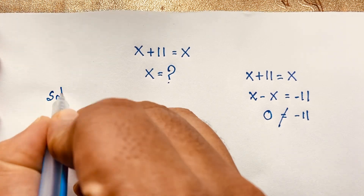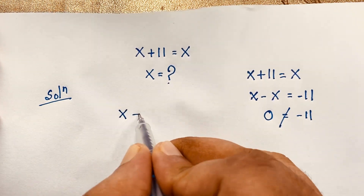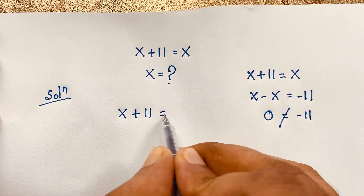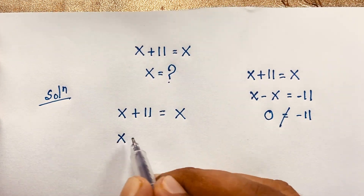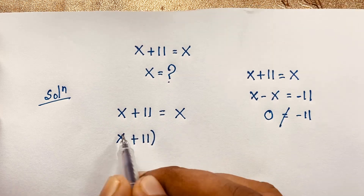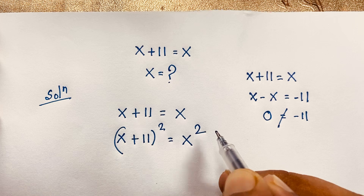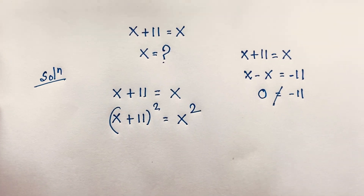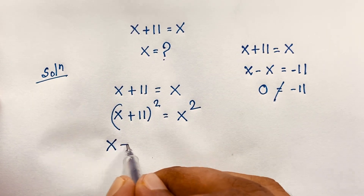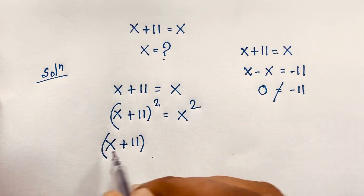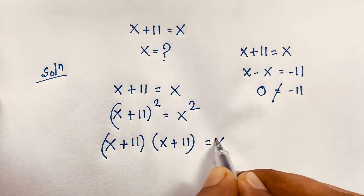I solved this question using an easy method. Our question is x plus 11 is equal to x. Now I use both sides whole square, so x plus 11 bracket whole to the power 2 is equal to x squared. I use both sides whole square. Then x plus 11 times x plus 11 is equal to x squared.